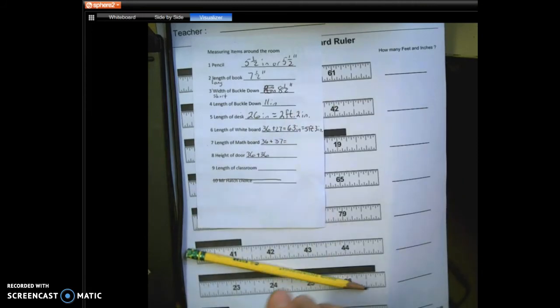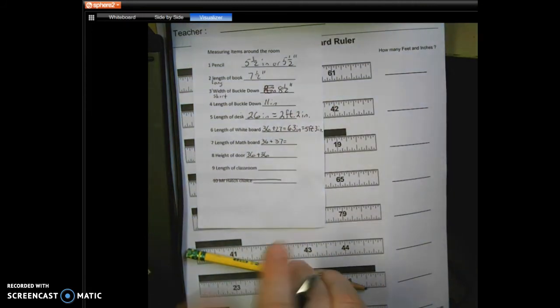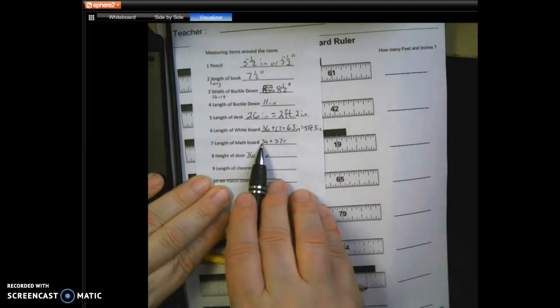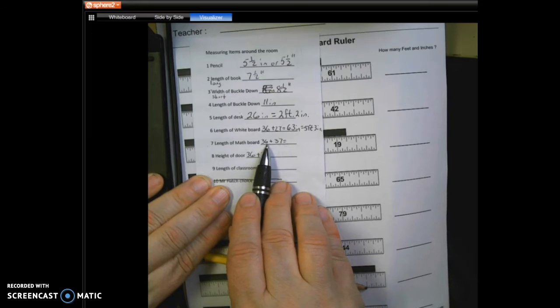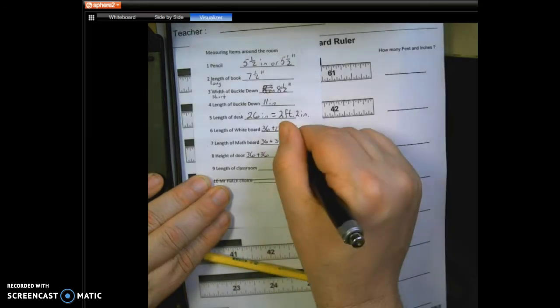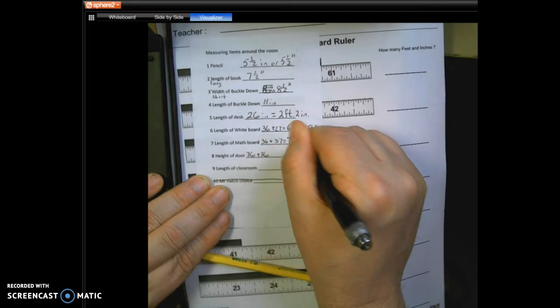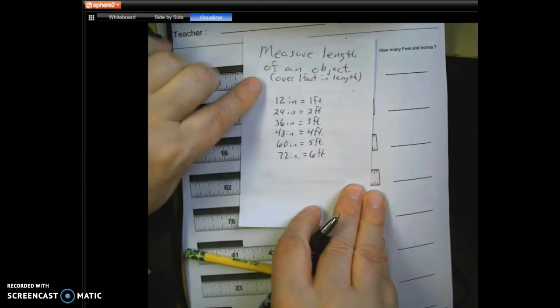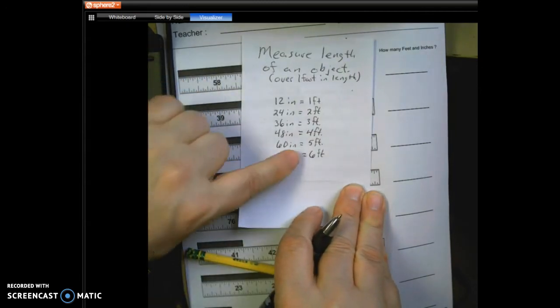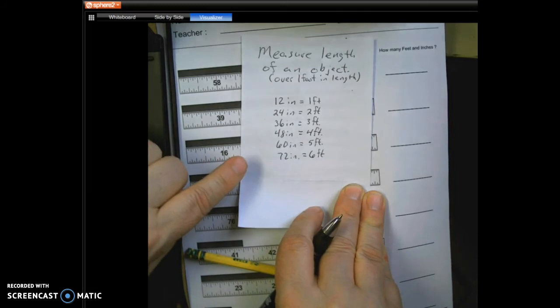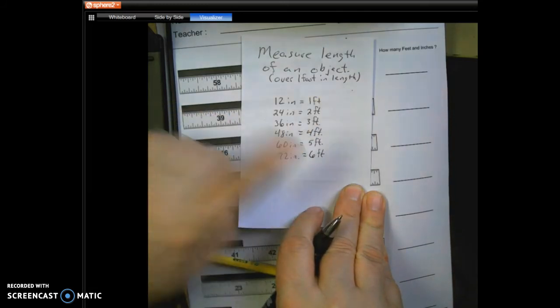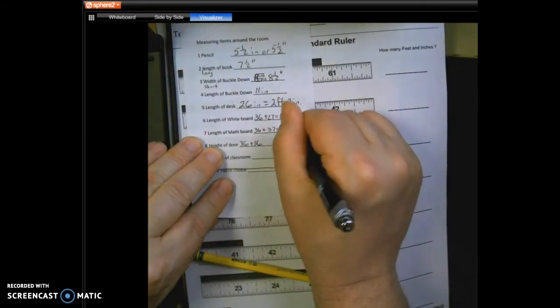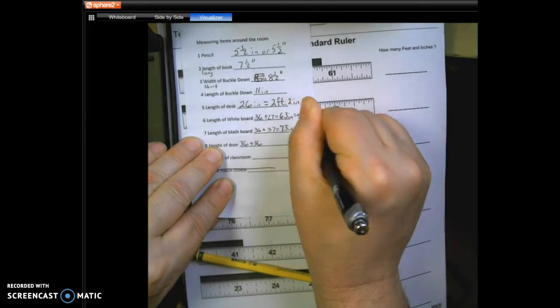The length of the math board, we're going to do the same thing. One easy way that I do this is 30 plus 30 is 60. 60 plus six is 66. 66 plus seven is 73 inches. When I convert that, I'm looking for 73. I come all the way down here. That's 72, so I know it's going to be six feet. So it's going to be six feet, one inch after that. So on my conversion right here, this equals six feet, one inch.